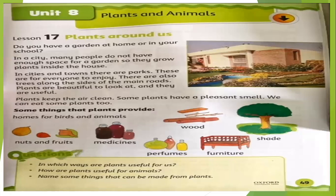We will read lesson number 17 and 18 about the animals. Lesson 17 is about the plants around us and lesson 18 is animals around us. So let's start with lesson 17, Plants Around Us.